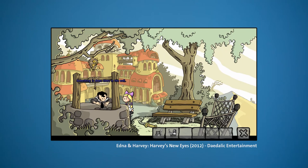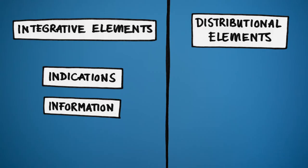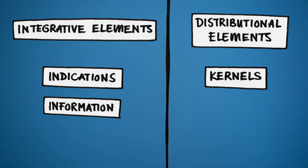Whether they be keys — 'something is down there in the well, I can see something sparkling, I hope it's the key to the cellar' — suitcases full of money, or rubber chickens, to use an example from Monkey Island. Distributional elements are subdivided into kernels — distributional segments with a chronological and logical function, such as game objects that have to be found in one place and used in another.